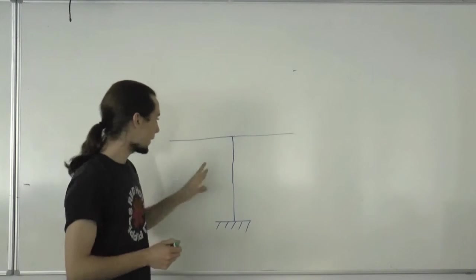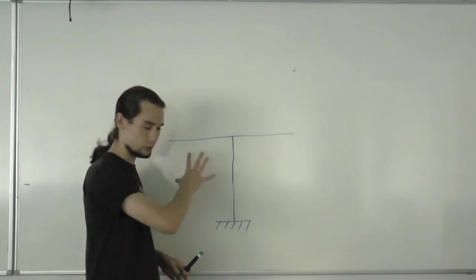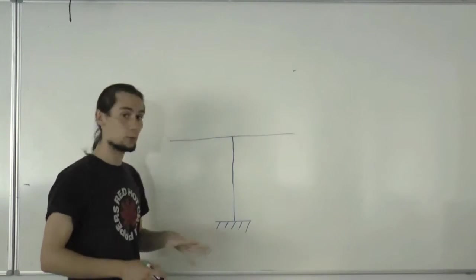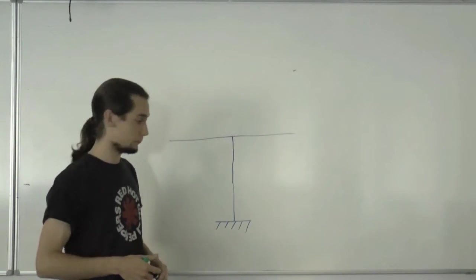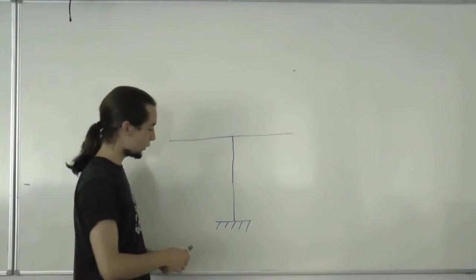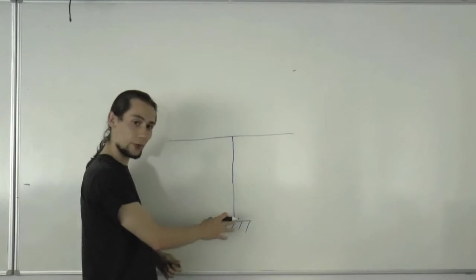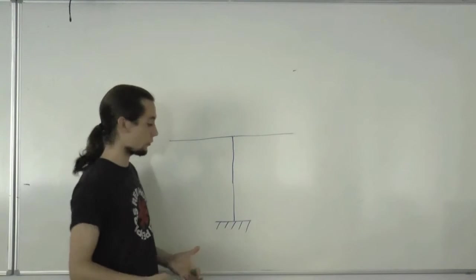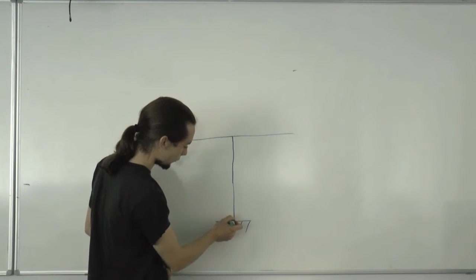Finally we're going to have to work out the deflected shape of our structure. The best place to start with that is to look at points where we know exactly what's going to happen, and the best place to do is start at the support. We know there's not going to be any horizontal or vertical deflection. Because we've got an encastre here, there's not going to be any rotation either. So we're going to start off going vertically upwards.